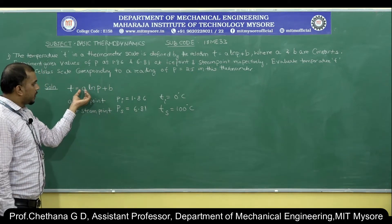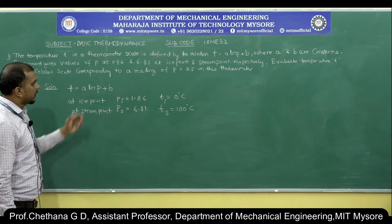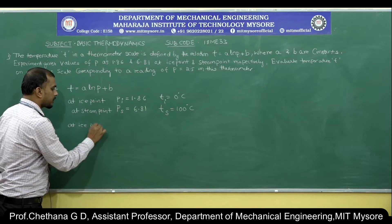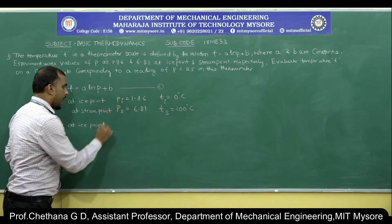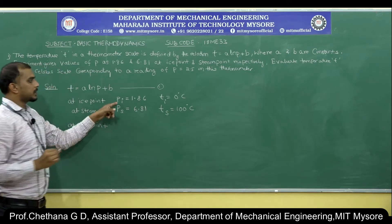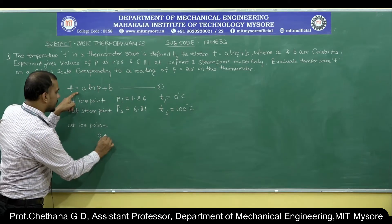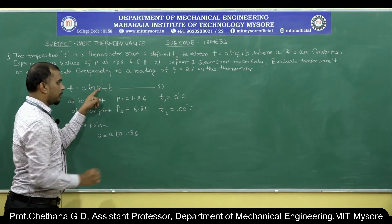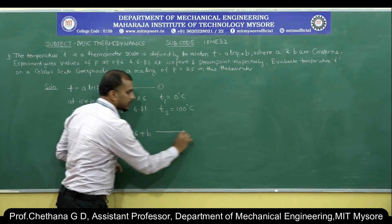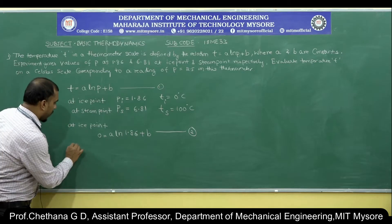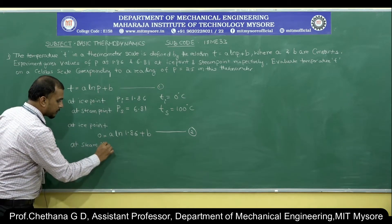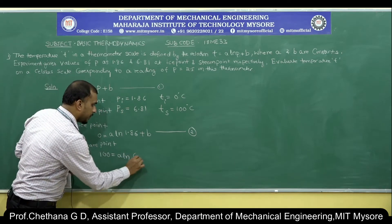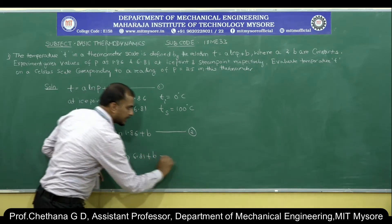To do that we need the values of a and b, so we will solve for them using the boundary conditions. At ice point, T = 0 and p = 1.86, so: 0 = a·ln(1.86) + b — call this equation 2. At steam point, T = 100 and p = 6.81, so: 100 = a·ln(6.81) + b — call this equation 3.